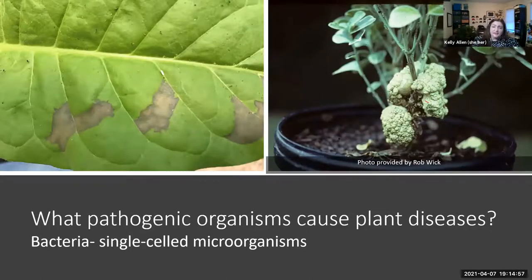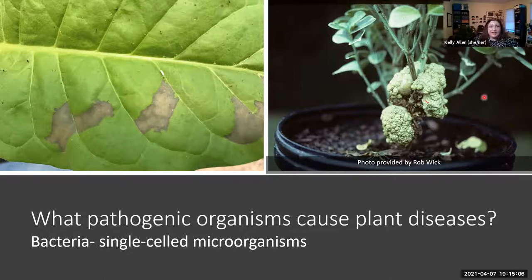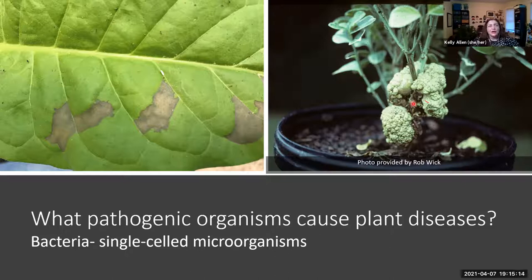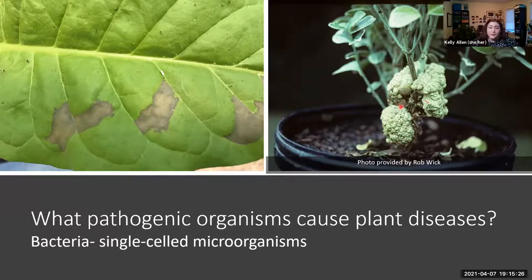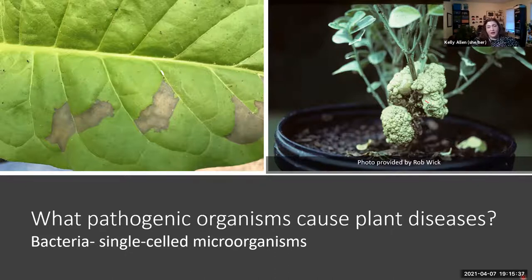Bacteria can also cause significant plant problems. Here I'm showing a bacterial leaf spot. You can also have bacterial wilts and these unsightly tumorous growths caused by bacteria. This is a common one to see in garden plants such as euonymus and other rosaceous plants — it's called crown gall. It's a very interesting disease, and it's caused by the bacterium Agrobacterium tumefascians, which if you've taken biology or biotechnology, you might be familiar with because of its use in transformation of other hosts.